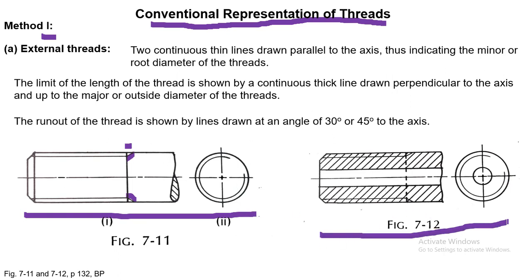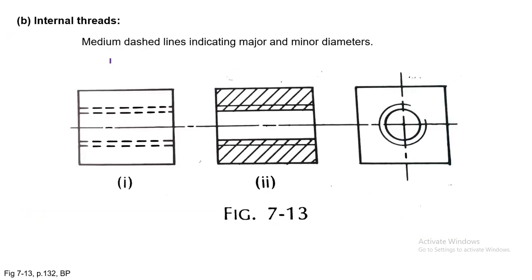For the external thread in section, the thick line is replaced by a dashed line. For internal threads, dotted lines represent the major and minor diameters. In section, hatching is applied. In the side view, the minor diameter is shown as a continuous circle, while the major diameter is broken — only 75 percent is shown. This is the key difference from external thread representation.